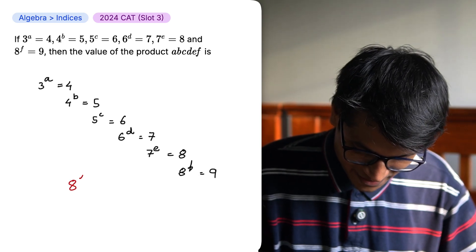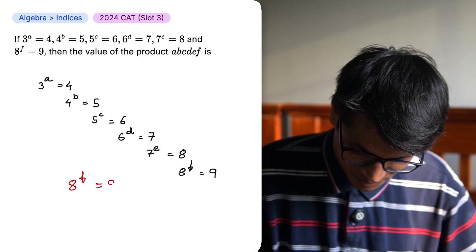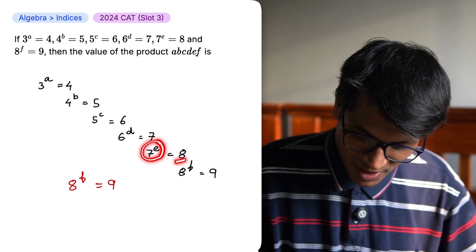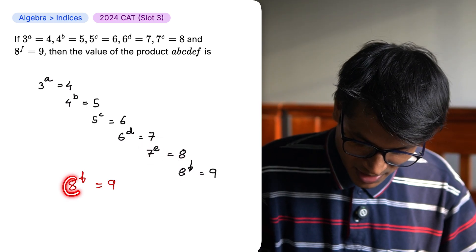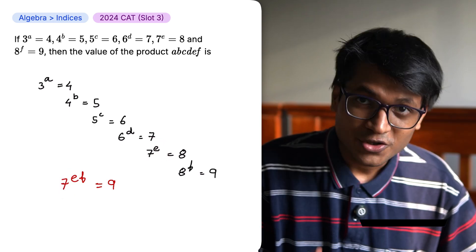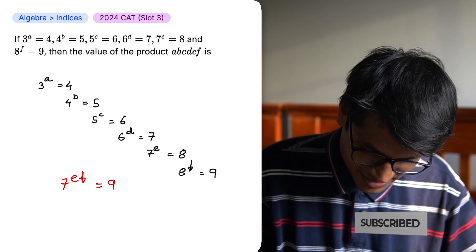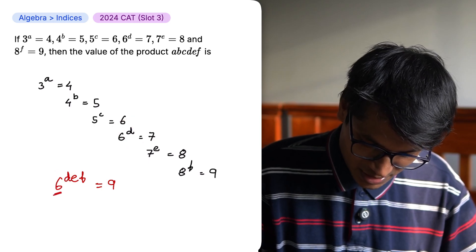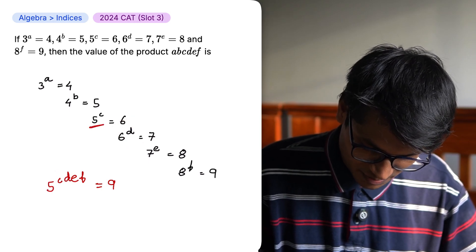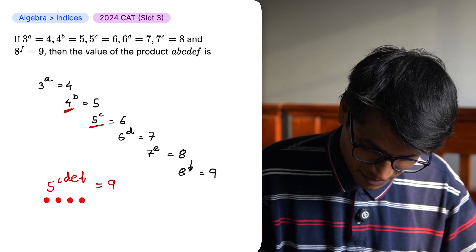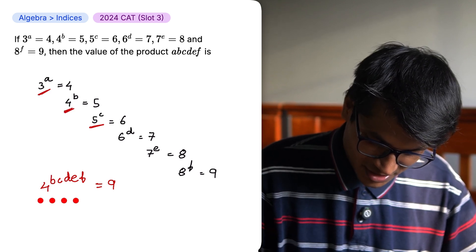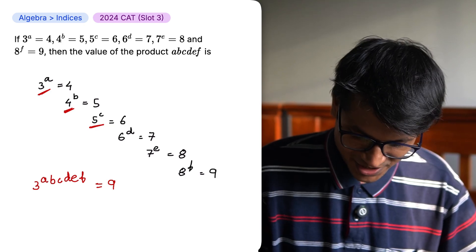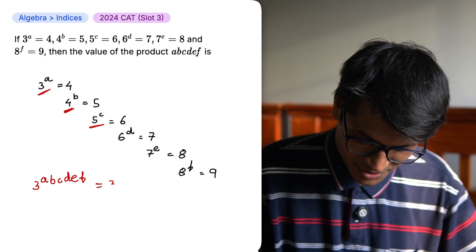We have 8 to the power f equal to 9. We see that 8 is equal to 7 to the power e. So this part can be replaced with 7 to the power e. You might see a pattern. This 7 is the same as 6 to the power d. Now this 6 is the same as 5 to the power c. 5 is same as 4 to the power b. 4 is same as 3 to the power a. So 3 to the power a, b, c, d, e, f equals 9 which is nothing but 3 to the power 2.